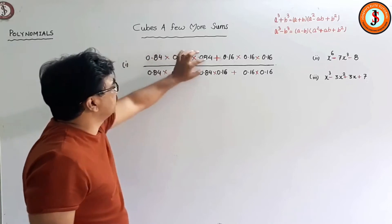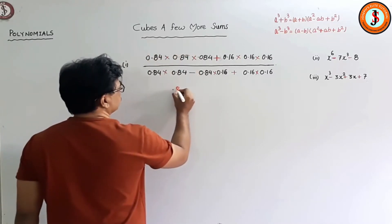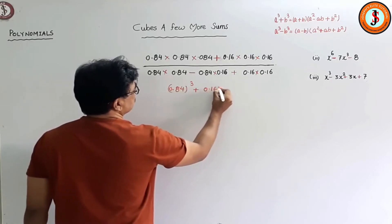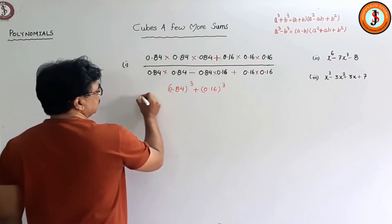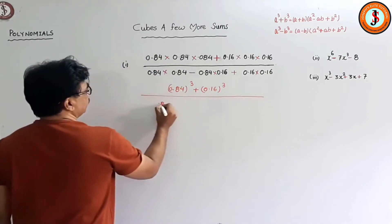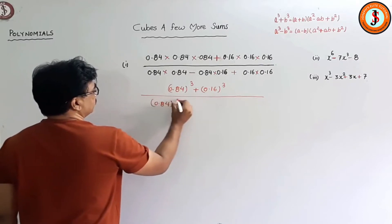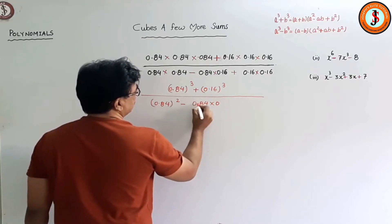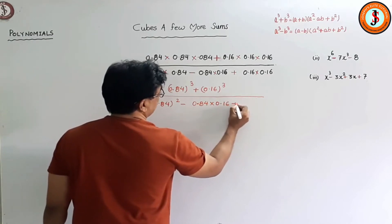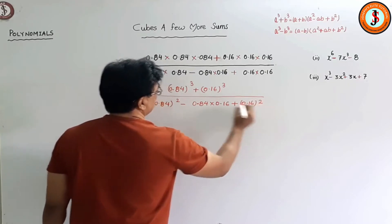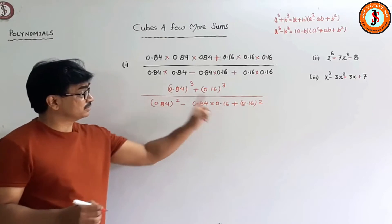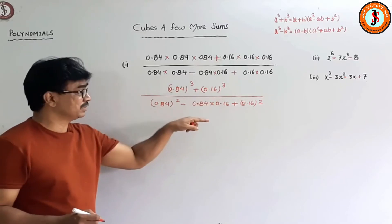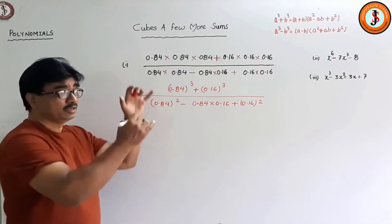For example, this same thing appears three times, so it is the cube of 0.84, plus the cube of 0.16. Then in the denominator we have 0.84² minus 0.84 × 0.16, plus 0.16². Now the a³ + b³ formula will factorize to (a + b)(a² - ab + b²), and that can be cancelled out because in product form, numerator and denominator can cancel.